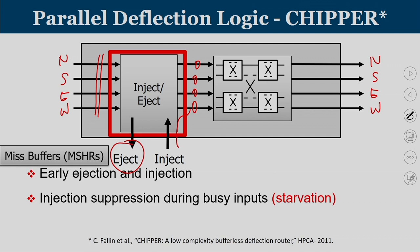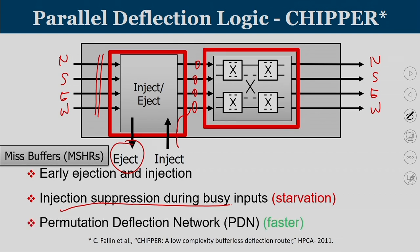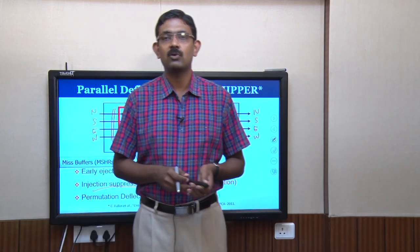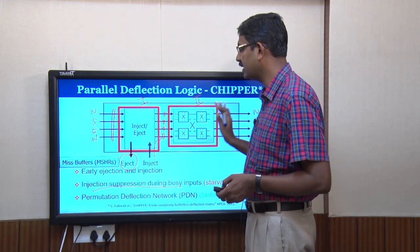Ejection is placed early in the pipeline so that when a flit is ejected, the freed channel gives space for newly injected flits. Injection suppression during busy inputs can lead to starvation. The second stage is the permutation deflection network acting as a fast second cycle. Chipper is a two-cycle router: in cycle one, ejection and injection are performed; in cycle two, the permutation deflection network handles port allocation. This parallel deflection logic is what is implemented in Chipper.